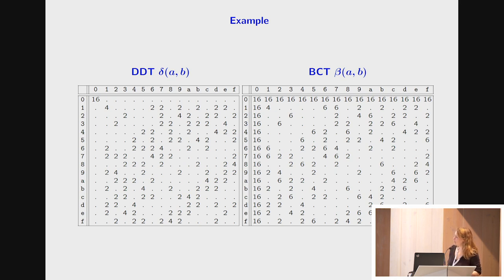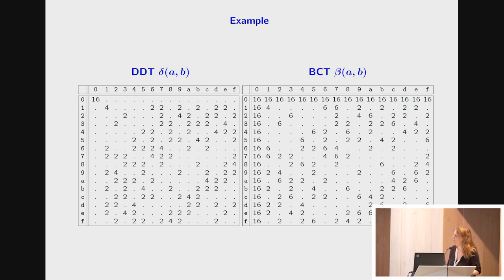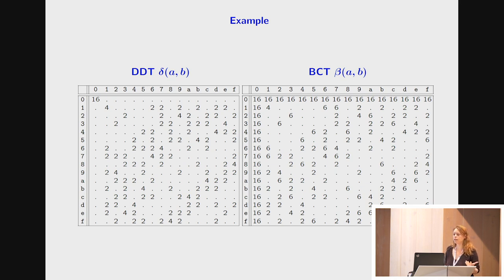Here is an example for a 4-bit S-box. On the left is the DDT of the S-box. I use the notation δ(A, B) to denote the entry at row A and column B of the DDT. One of the most relevant parameters related to the DDT is the maximal value of its entries when the input difference is not zero — this is called the differential uniformity of the S-box. In this case, the differential uniformity is equal to 4. On the right is the BCT of the same S-box.